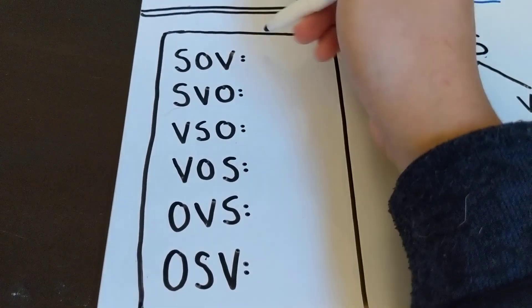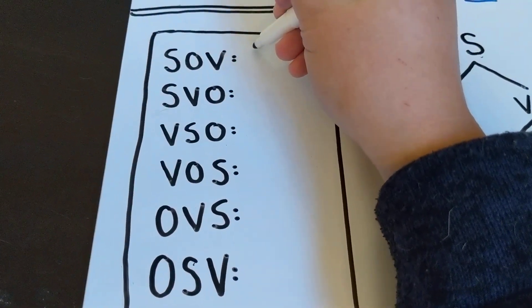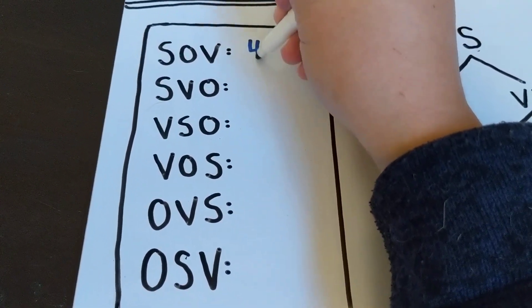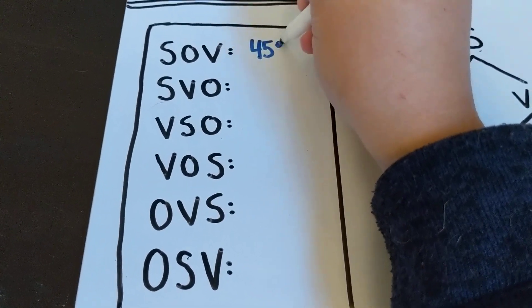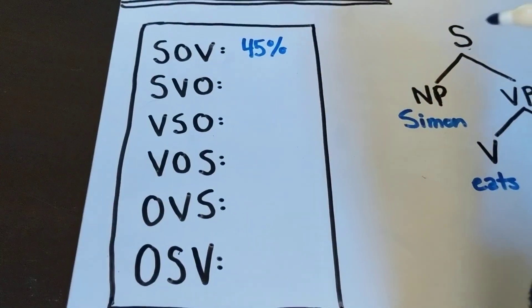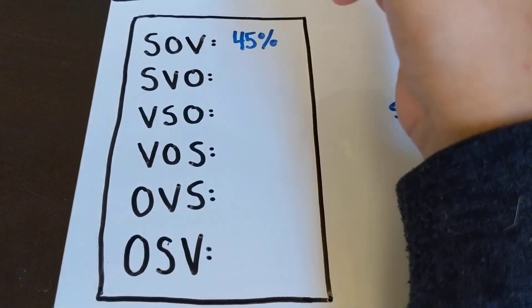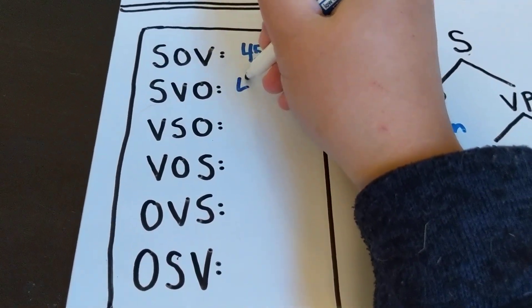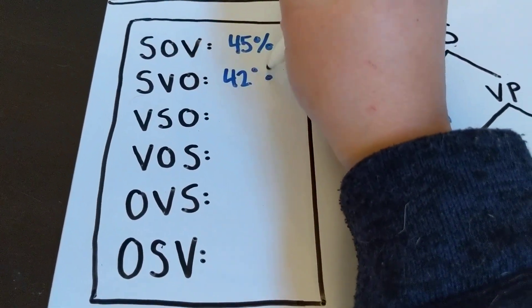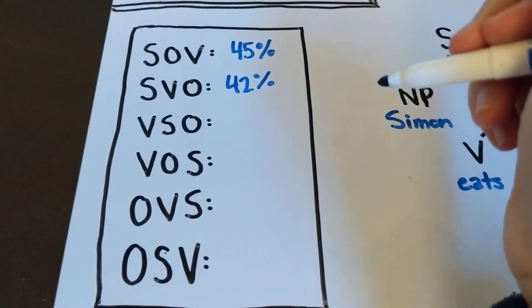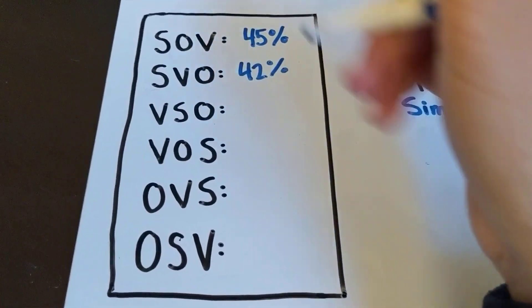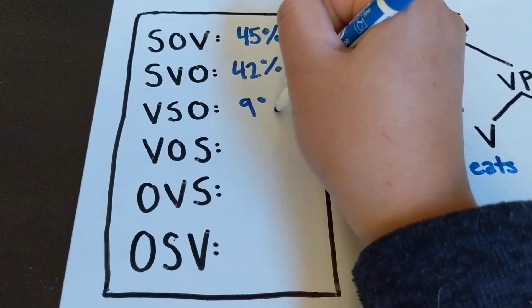What we see in reality is that SOV is about 45% of the world's languages. So that's the most common one, followed very closely by SVO, which is about 42% of the world's languages. And then VSO has about 9% of the world's languages.